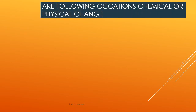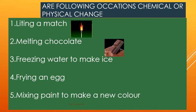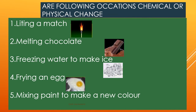Now refer to the given occasions and decide whether it is a physical change or a chemical change. First: lighting a match — burning takes place, so it's a chemical change. Second: melting chocolate — solid chocolate converts into a liquid state, so it's a physical change. Third: freezing water to make ice — liquid water converts into a solid state, so it's a physical change. Fourth: frying an egg — chemical change. Fifth: mixing paint to make a new color — chemical change.